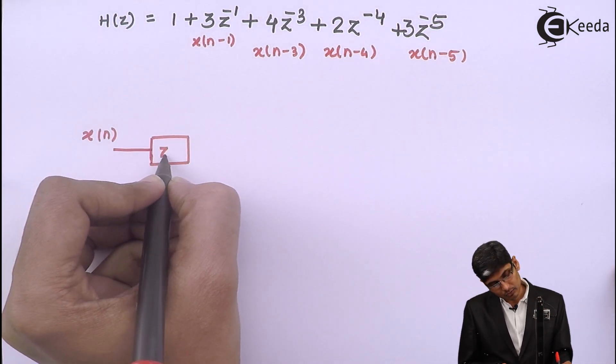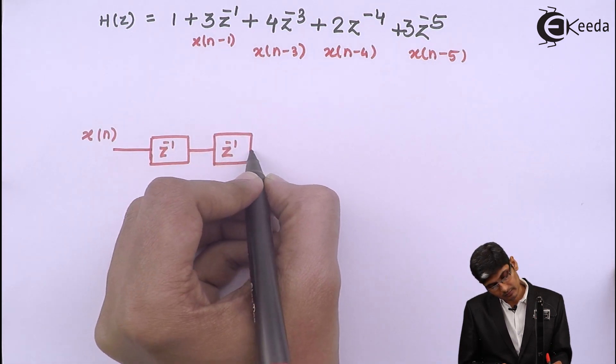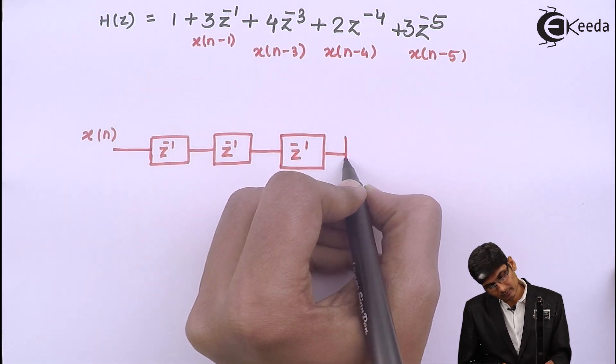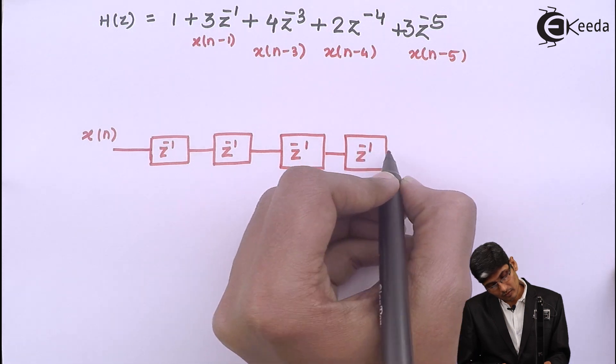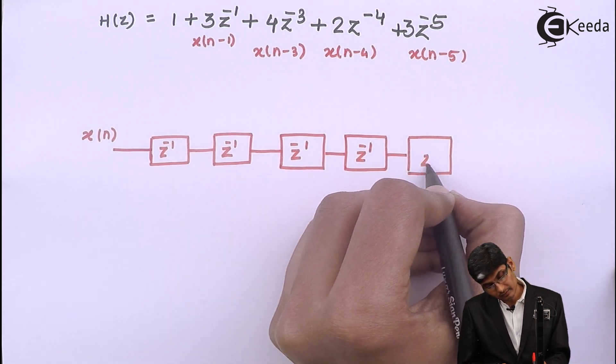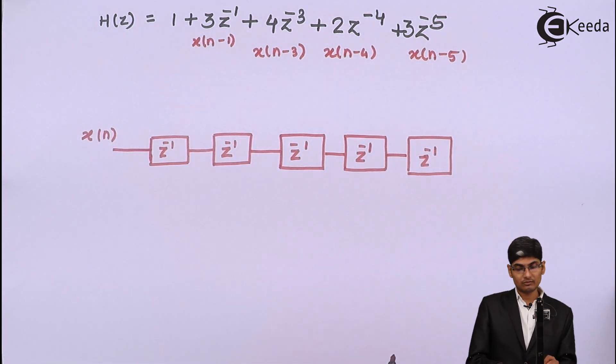The first one. Then the second one. Third one. Fourth one. And finally, the fifth one. Okay, so we have the 5 delay structures.